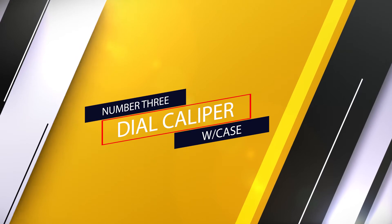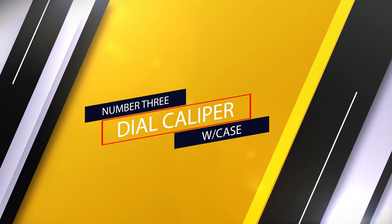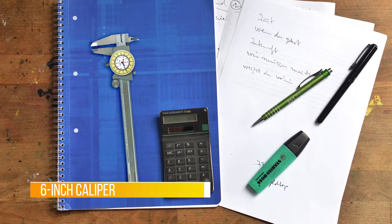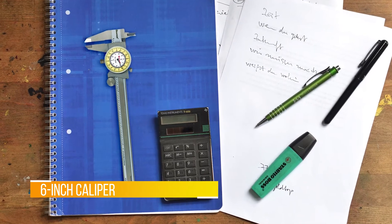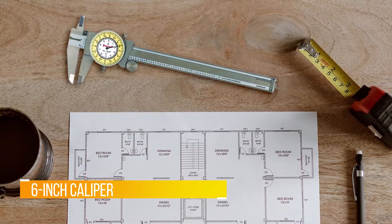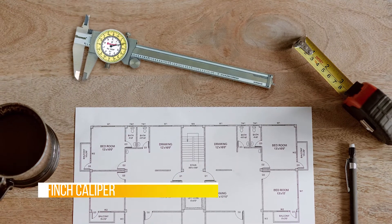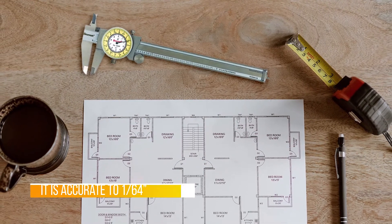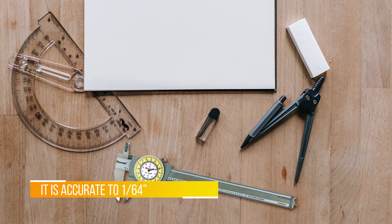Number three: dial caliper with case. Six-inch caliper Stare-it has a good reputation for precision and accuracy. In addition to the decimal readout on the inner wheel, a fractional readout on the outer wheel makes it perfect for woodworking. It is a little heavier than other calipers, but that also makes it sturdier and it just feels high quality.